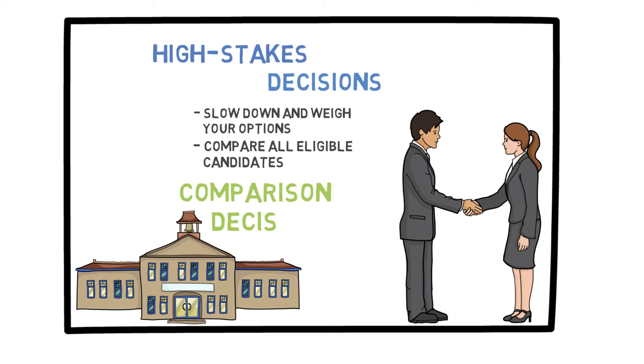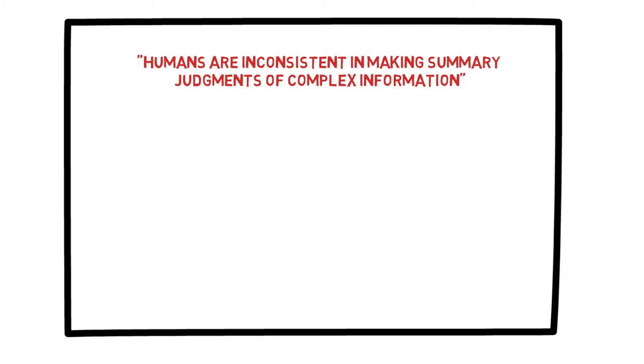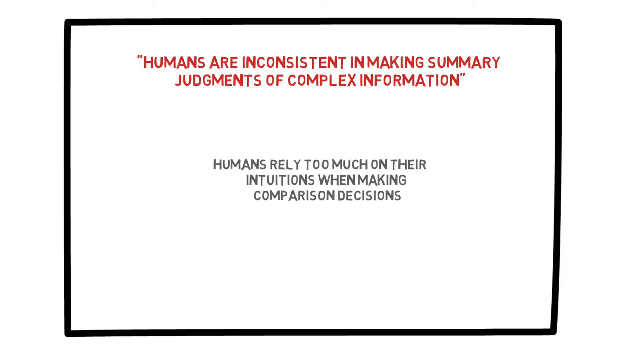These are examples of comparison decisions. In his book Thinking Fast and Slow, Daniel Kahneman explains and discusses these very issues. He says that humans are inconsistent in making summary judgments of complex information. In general, humans rely too much on their intuitions when making comparative decisions — we are not good at it and are often inconsistent. Our evaluations are impacted by many external and internal factors.